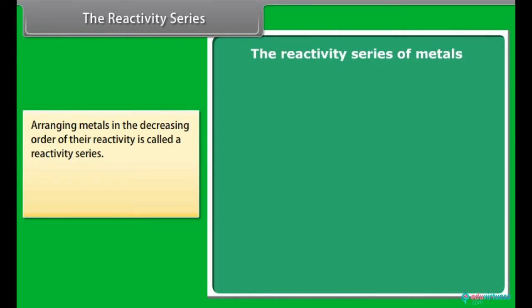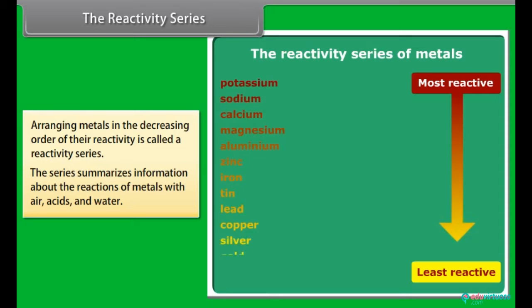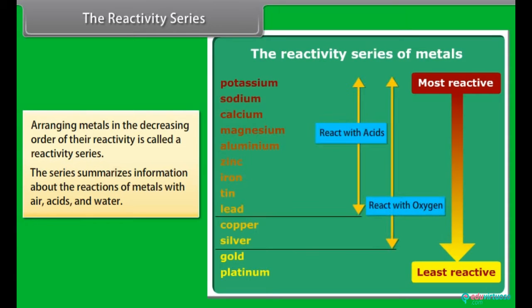The reactivity series. Metals being arranged in the decreasing order of their reactivity is called a reactivity series. It is used to summarize information about the reactions of metals with air, acids and water.